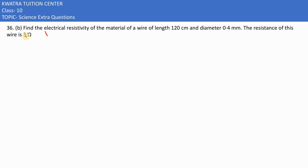Now the next part says find the electrical resistivity of the material of a wire of length 120 cm. So 120 cm, you have to convert to meters first.